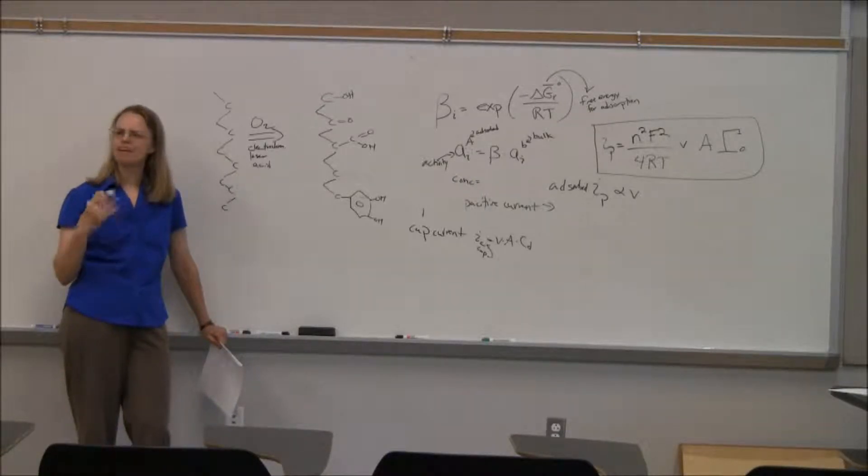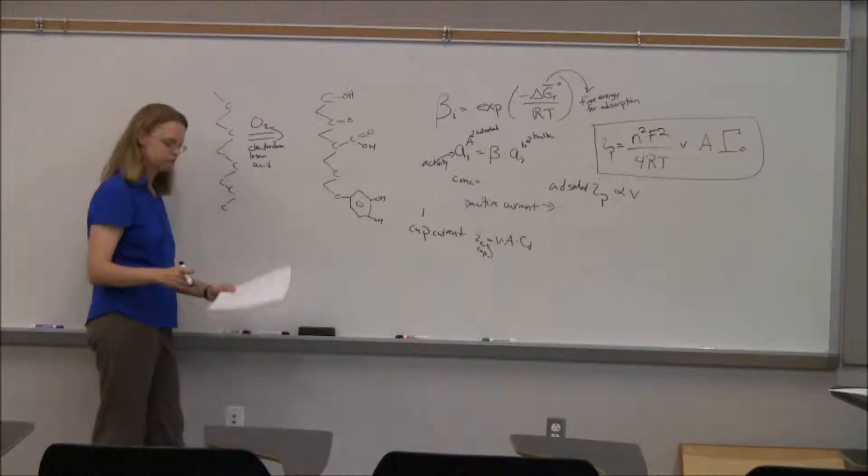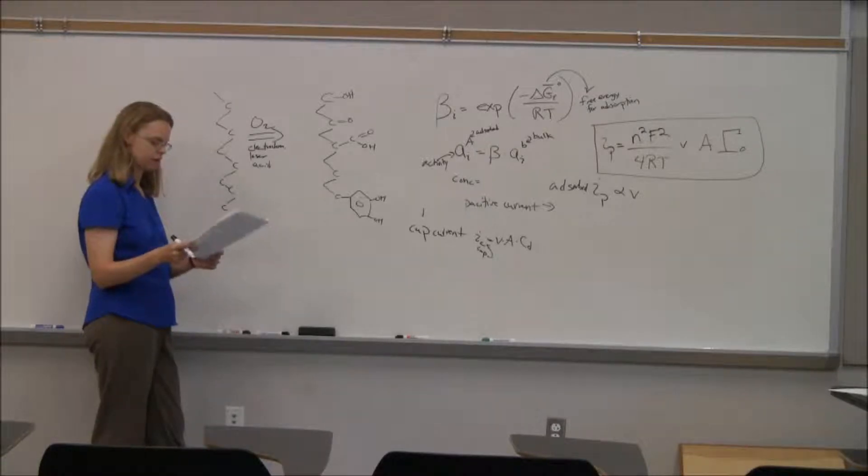There's been a couple papers in the last five years or so, McCreery's group, Wightman, to try and characterize some of these things and where they show up in the background current and stuff like that that are really useful to the field. They're not our shadow pictures that everybody would want to be, but they're actually pretty useful to the field, talking about surface chemistry and what kind of groups are there.